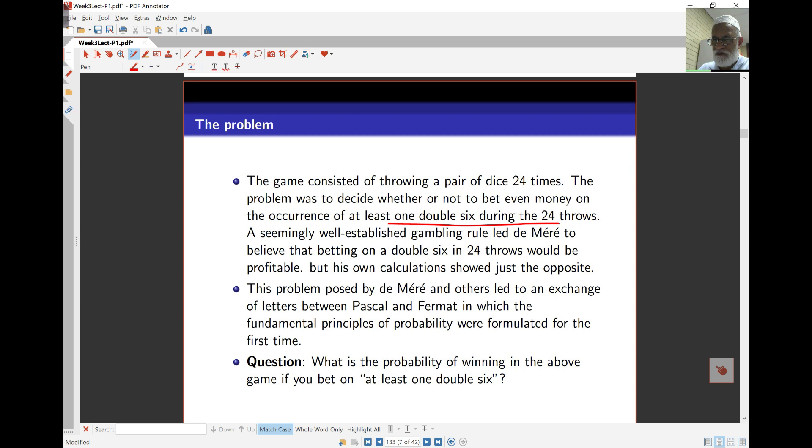The problem is: what's the probability of winning in the above game if you bet on at least one double six? That was the problem that led to the invention, or creation, of this area of mathematics and statistics for probability theory.